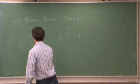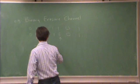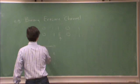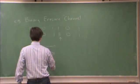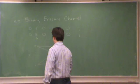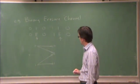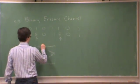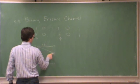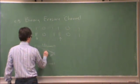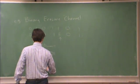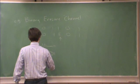So my diagram now looks like this. From 0, I go to 0 with probability 1 minus PE and erasure with probability PE. From 1, I go to 1 with probability 1 minus PE and to erasure with probability PE.